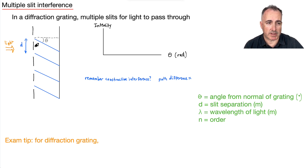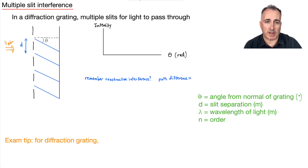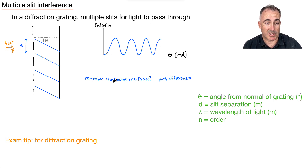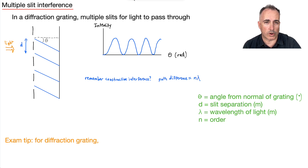Because there's a bunch of slits, they're all going to be interfering. We end up with some intensity pattern that goes up, down, up, down. Do you remember constructive interference? If there's constructive interference, that's when the path difference is equal to N times lambda, where N is some sort of order.